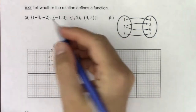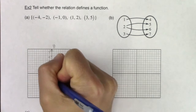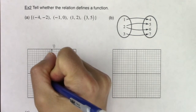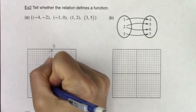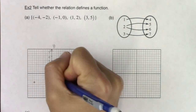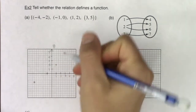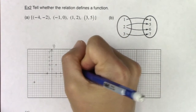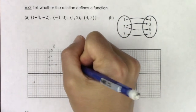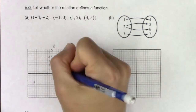Let's go graph these. I need to plot negative four comma one, negative two comma two, negative one comma zero, one comma two, and three comma five.